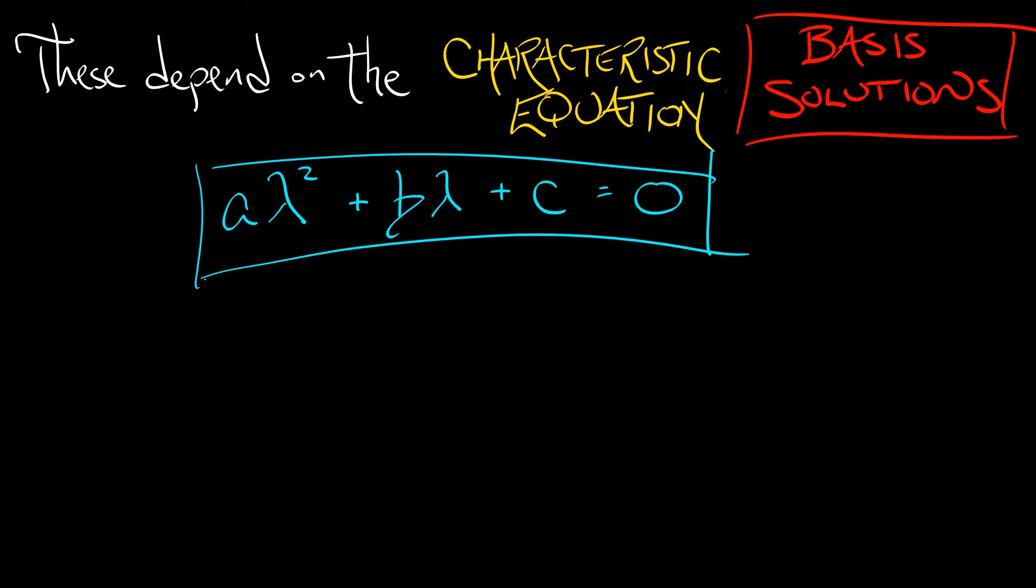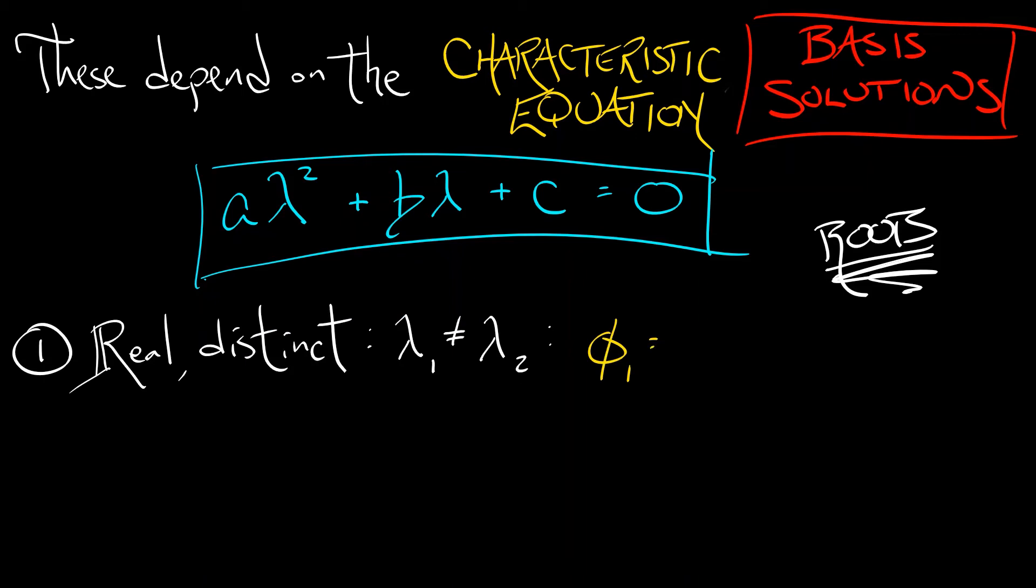So we care about the roots of this, and the first possibility is that you have real distinct roots, lambda 1 and lambda 2, real and different. In this case, the basis solutions are phi1 is e to the lambda 1t, and phi2 is e to the lambda 2t. That looks familiar.